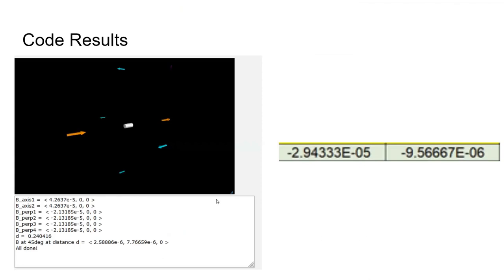So the results, these were the values of the magnetic fields that were found. This was the D value, and then this was the magnetic field at a 45 degree angle. And when looking at the D value, the D value was identical, but the magnetic field was different from the one in the experiment.